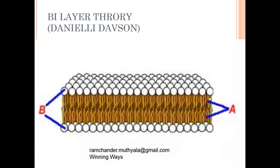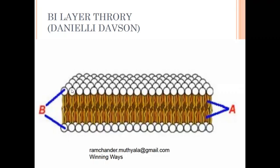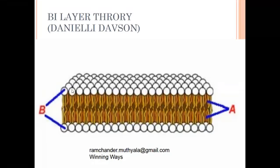The first theory is the bilayer theory, explained by Donnelly Dawson scientist. According to his theory, the plasma layer is made by two layers of lipids. Each phospholipid contains a spheroidal head and tail-like structures. The tails face towards the inside of the plasma membrane, so these tails are called hydrophobic tails. The spheroidal head faces towards the liquid side, so these heads are called hydrophilic heads.